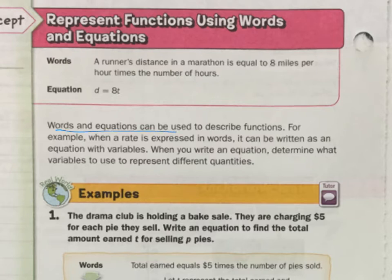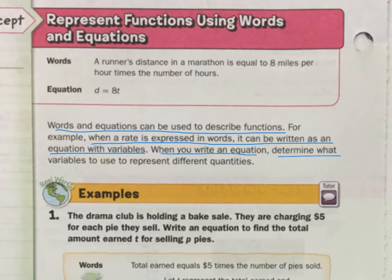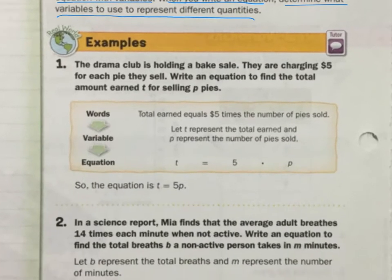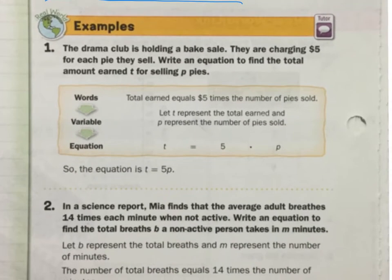Words and equations can be used to describe functions. For example, when a rate is expressed in words, it can be written as an equation with variables. When you write an equation, determine what the variables represent for the different quantities. Let's look at our first example.